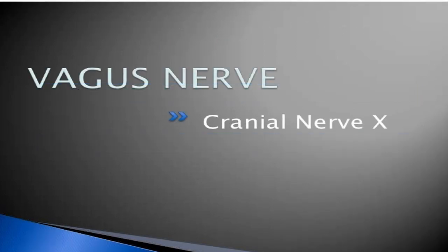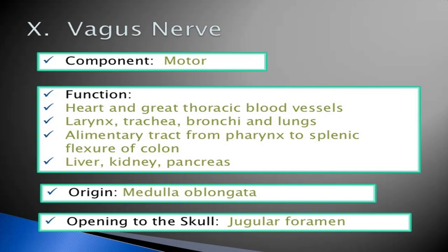The vagus nerve (tenth cranial nerve) has a motor component. Its function includes the heart and great thoracic blood vessels, larynx, trachea, bronchi, and lungs, the alimentary tract from the pharynx to the splenic flexure of the colon, and the liver, kidney, and pancreas. It has a large variety of functions. Its origin is the medulla oblongata. The opening to the skull is the jugular foramen.